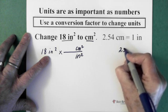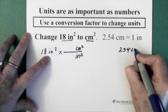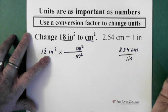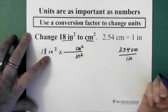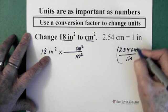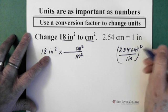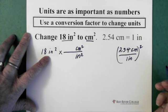I know there's 2.54 centimeters in 1 inch. I can set it up as a fraction like this. But I want squared units. So, what I do is I square the entire thing. And when I do this, everything inside the bracket gets squared.